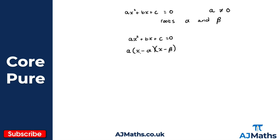Now what we're going to do is work backwards and expand this using FOIL. Expanding (x minus alpha)(x minus beta) gives us x squared, minus beta x, minus alpha x, and then positive alpha beta.